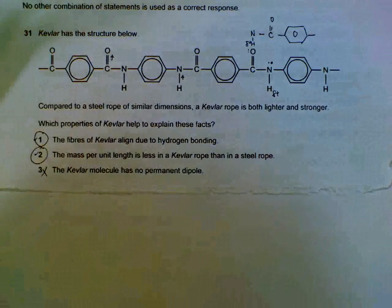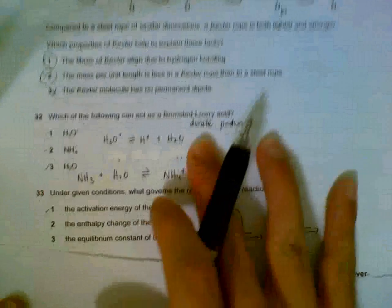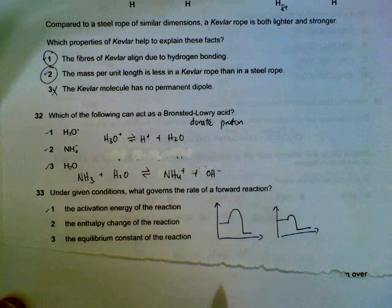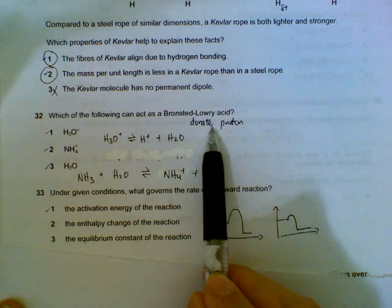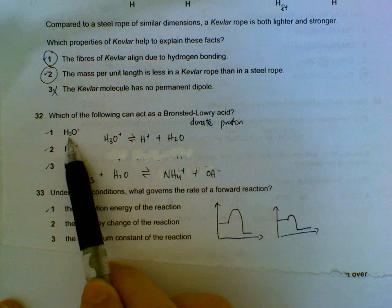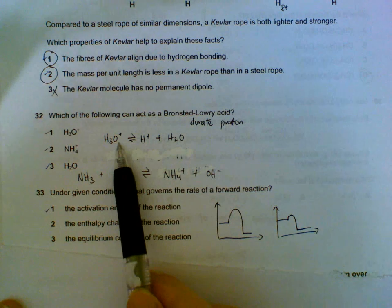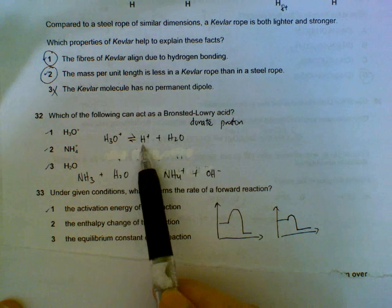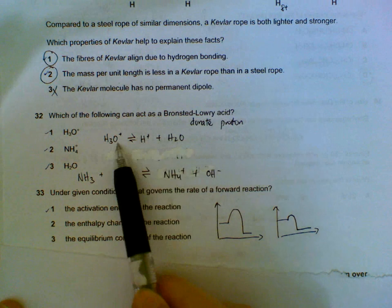Which of the following can act as a Bronsted-Lowry acid? That means which of them can donate a proton. For the first one, hydronium ion H3O+ can. If we draw the equilibrium, we can see that it can lose an H+ and form H2O, so it is acting as an acid in this case.